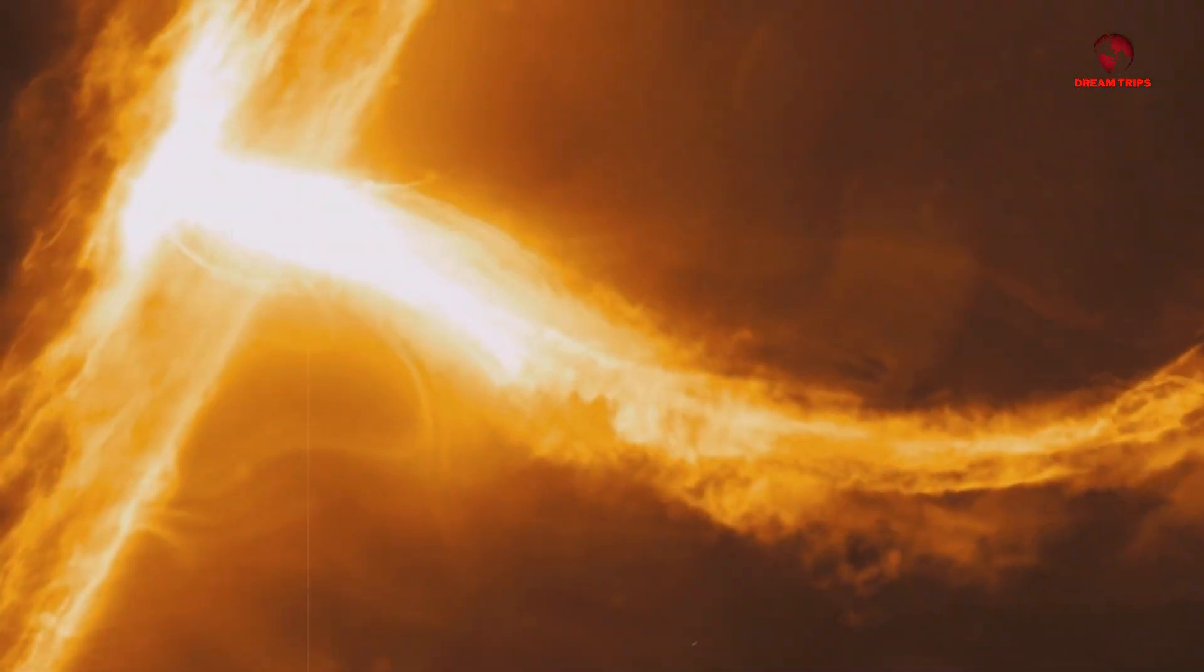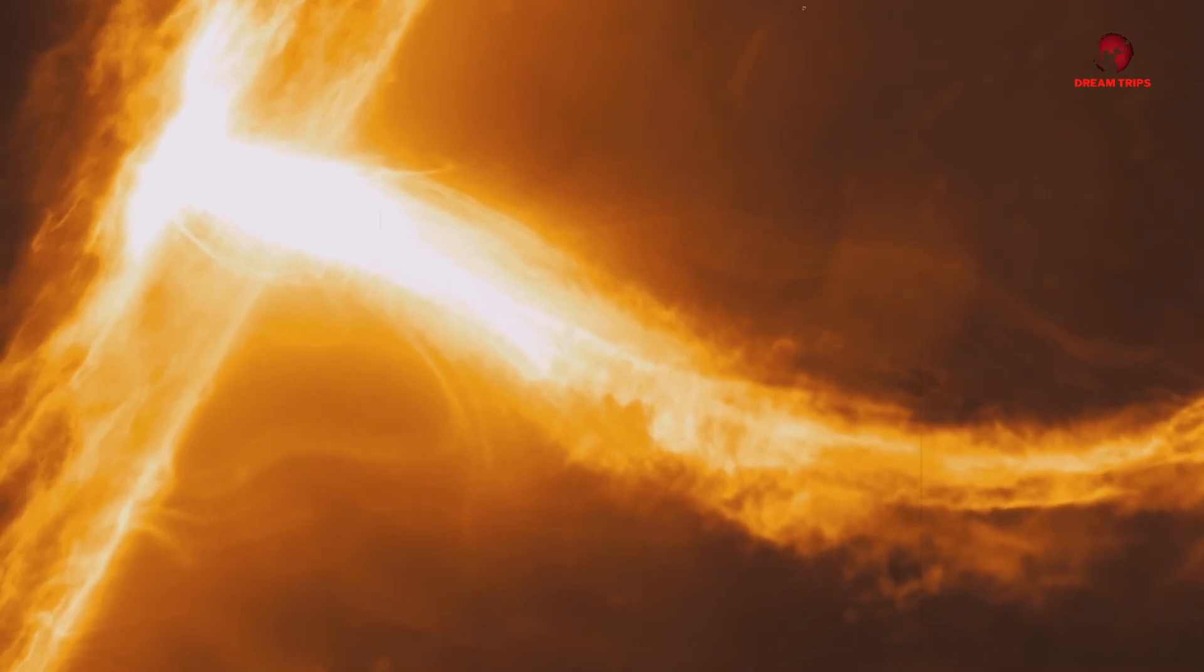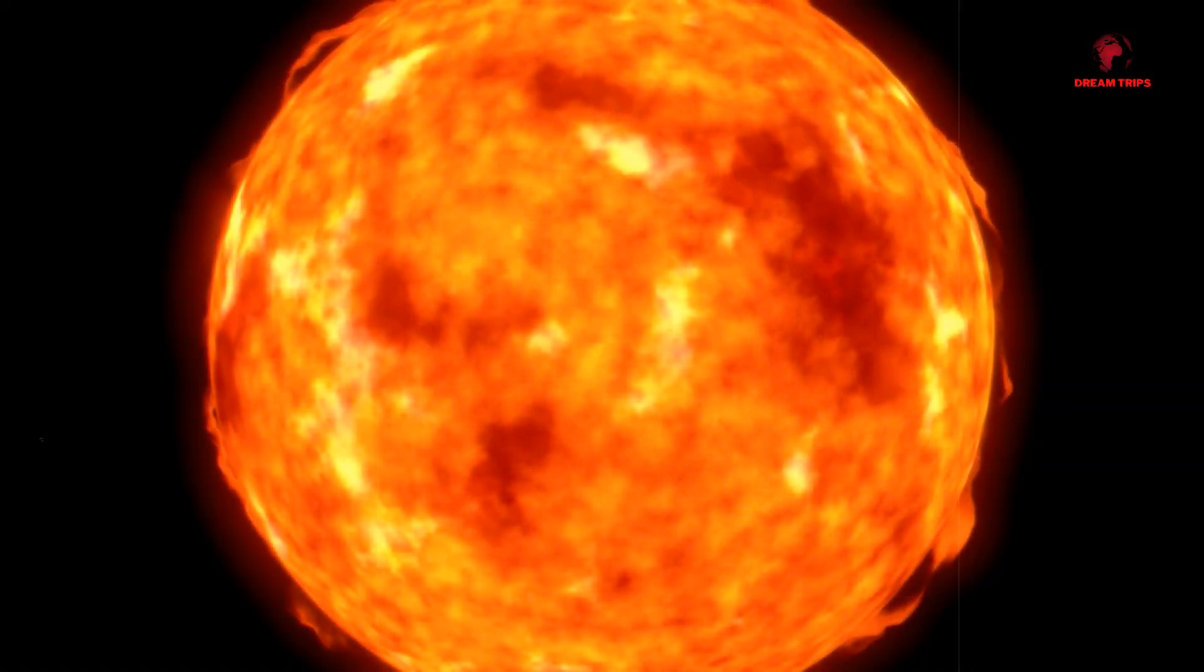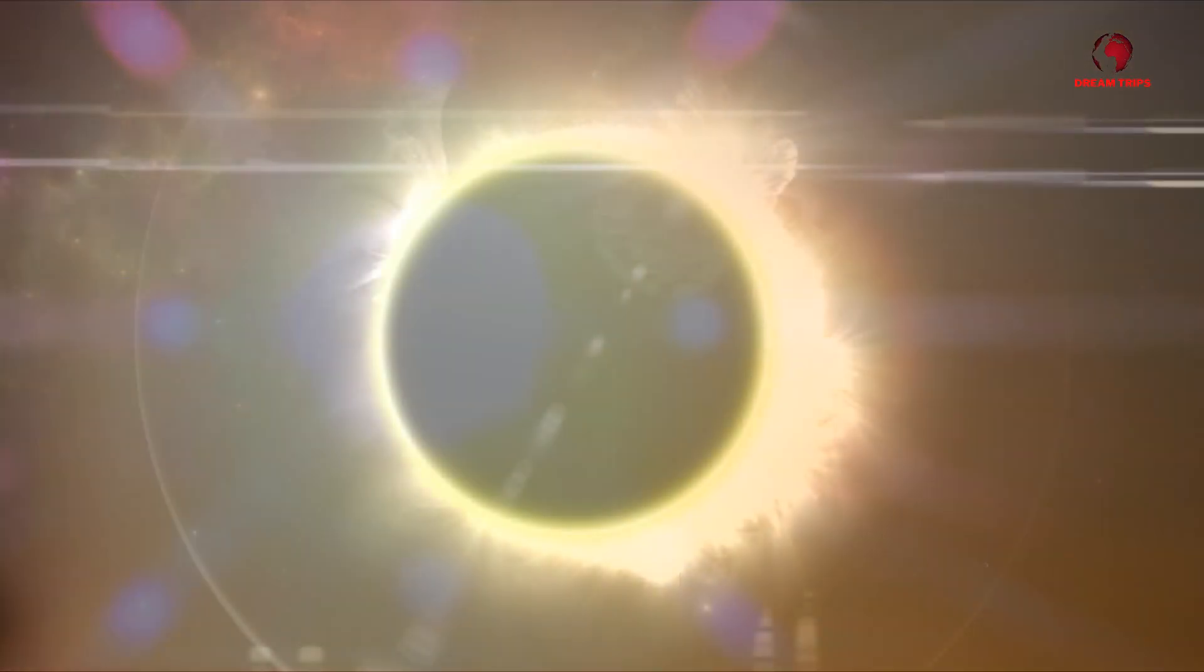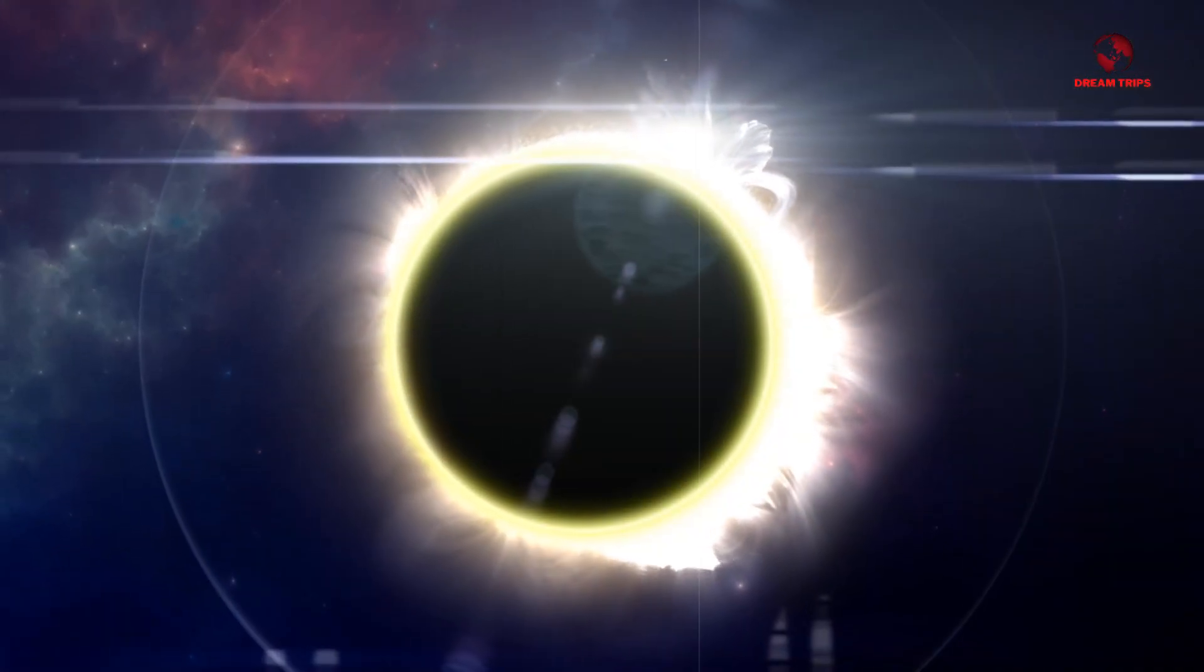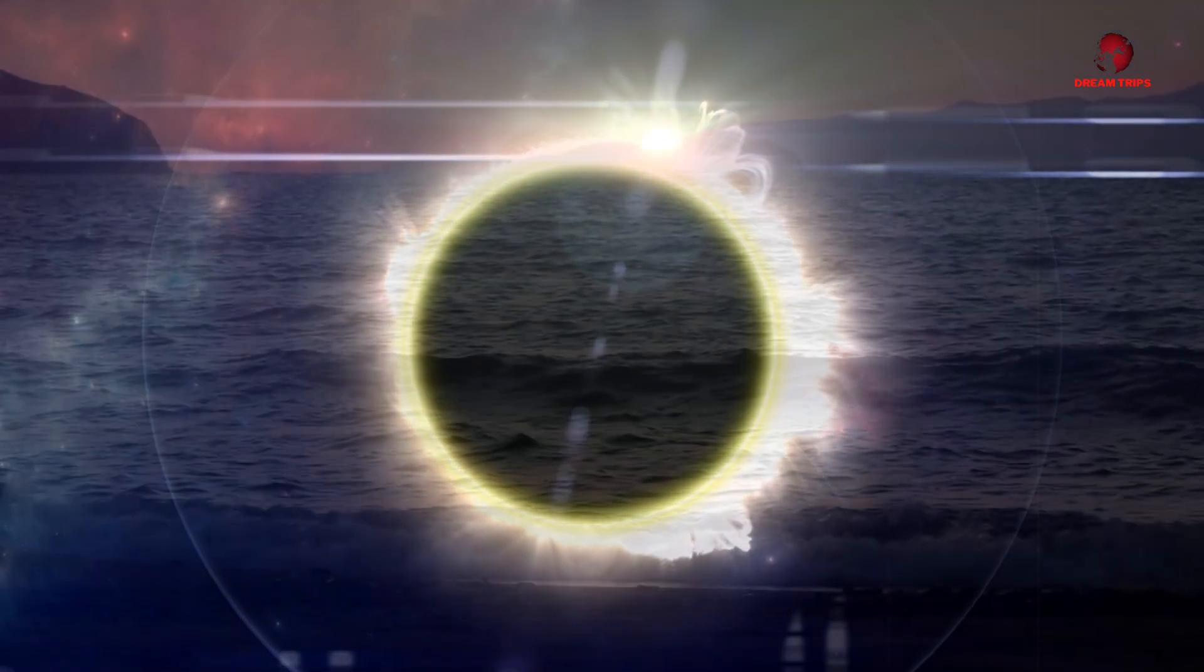Occasionally, this energy gets tangled up in magnetic fields, leading to the explosive release we call a solar flare. These flares can be accompanied by coronal mass ejections, or CMEs, which are huge bubbles of gas threaded with magnetic field lines that are ejected from the sun over the course of several hours.